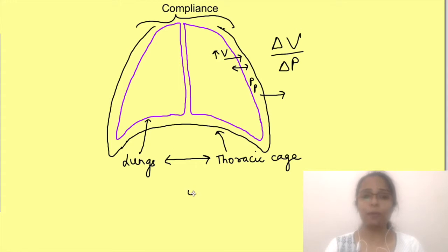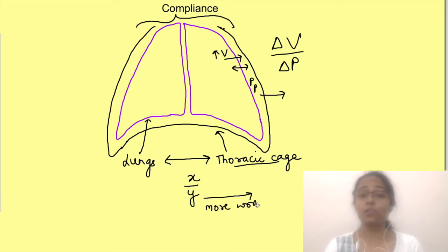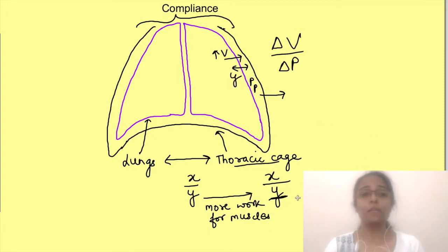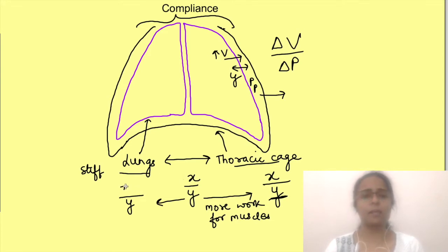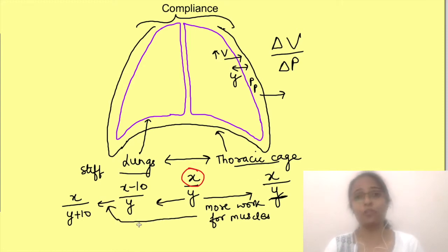Say a pressure change of Y is required to cause a volume change of X. If the thoracic cage is stiff, the inspiratory muscles need to work more to cause the same expansion and generate the necessary pressure across the lungs — so even if lungs are normal, work increases. Similarly, if the thoracic cage is normal but lungs are stiff, the same Y pressure will cause less than X volume change, so to bring in X amount of air, more pressure is required and the inspiratory muscles must generate more thoracic cage expansion.